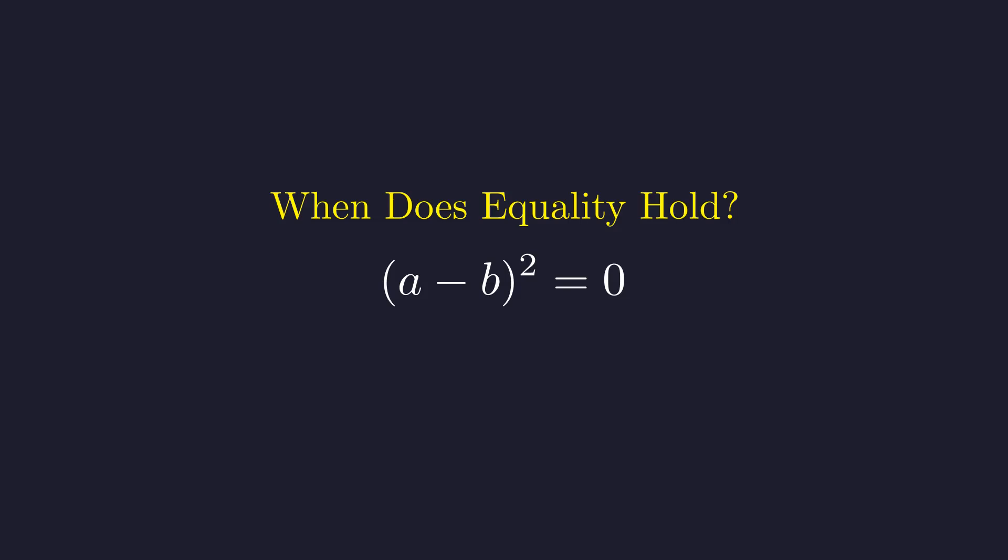Since a square can only equal 0 when its base is 0, we need A minus B to be 0. In other words, A must equal B.